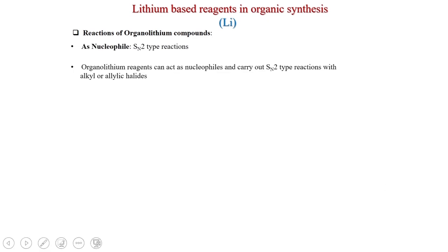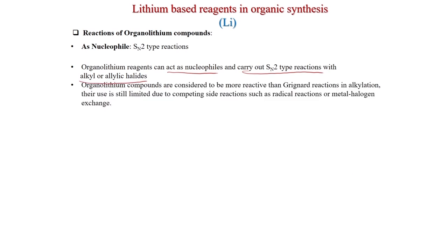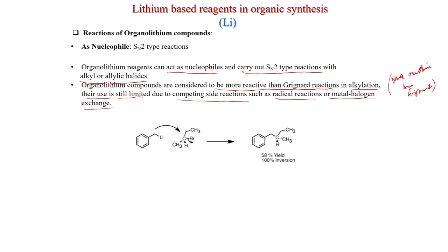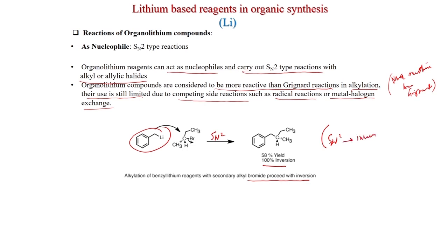SN2-type reactions are also possible: organolithium reagents can act as nucleophiles in SN2-type reactions with alkyl or allylic halides. Organolithium compounds are considered more reactive than Grignard reagents in alkylation; however, they are limited by competing side reactions such as radical reactions and metal-halogen exchange. When Grignard addition may not proceed due to steric reasons, organolithium compounds can be used. SN2 reaction with a benzyl lithium species gives 100% inversion of stereochemistry.